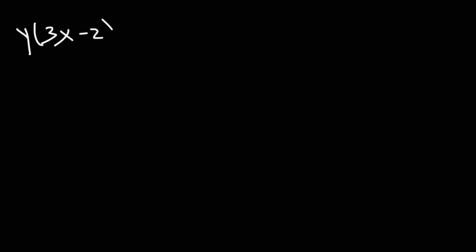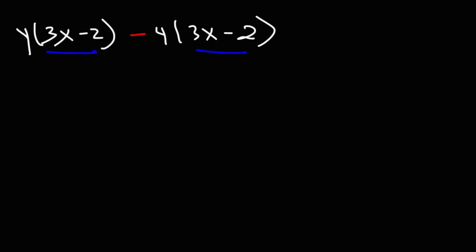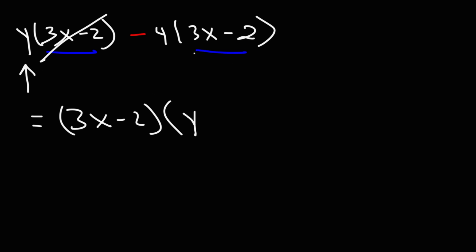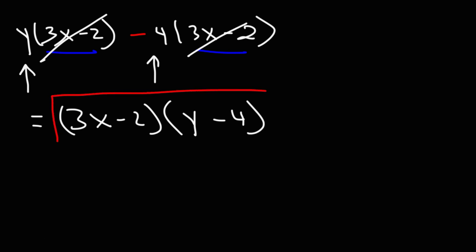Let's try a similar example with two variables: y times (3x minus 2) minus 4 times (3x minus 2). Go ahead and factor out the GCF. We can clearly see that the GCF is 3x minus 2. Once we factor it out, we're left with y from the first term and negative 4 from the second term. So the answer is (3x minus 2)(y minus 4).